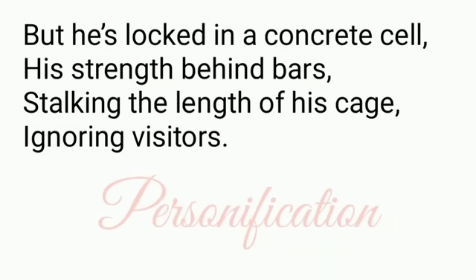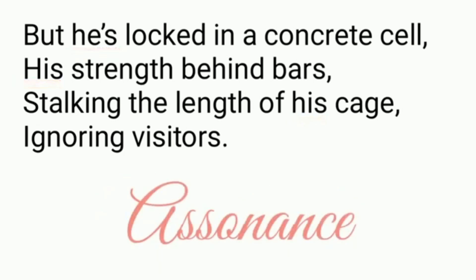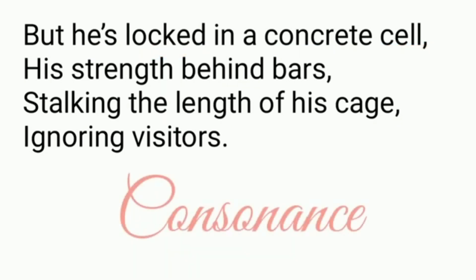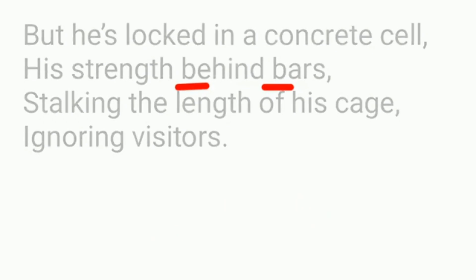Now let's move to the fourth stanza. But he is locked in a concrete cell, his strength behind bars, stalking the length of his cage, ignoring visitors. Here you can see personification — again the poet used 'he' and 'his' instead of 'it.' We also have assonance, where the vowel sound 'e' is repeated in 'he is locked in a concrete cell.' Then consonance — the consonant sound 's' is repeated in 'his,' 'strength,' 'bars.' Alliteration is also used, meaning consonant sounds repeated in a sentence next to each other.